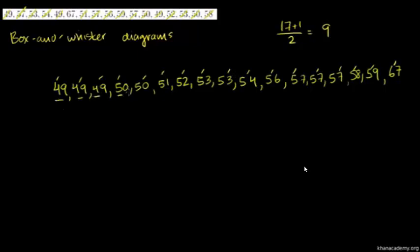Counting from this side as well gives us 53. And if you ever have a situation where you only had 16 numbers, it would be 16 plus 1 divided by 2, giving you 8 and a half — meaning you count 8 spaces and go halfway between that number and the one right after it. But anyway, 53 is our median.